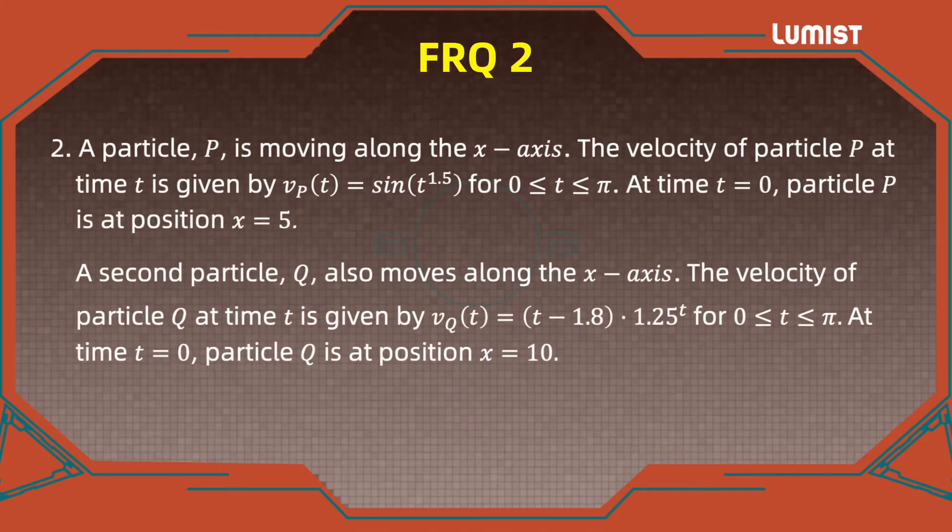As you can see in this question, you're given a particle P that is moving along the x-axis. We are given the velocity of that particle, this is a trigonometric function, and t goes from 0 to π. We're also given an initial condition, so when t equals 0, the position is 5.